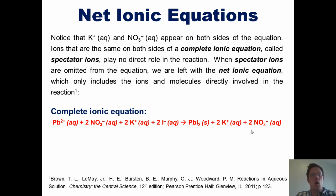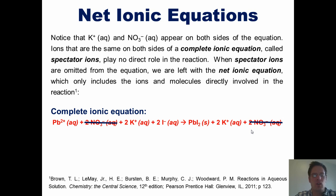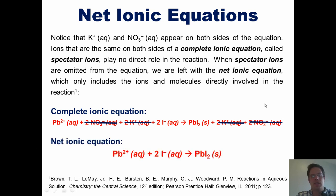When spectator ions are omitted from the equation, we are left with something called the net ionic equation, which only shows the ions and molecules that actually do any type of reaction. So what we can do is cross out the nitrate because it's the same on both sides, and cross out the potassium because it's the same on both sides, just like we would in an algebraic equation. Everything that is left we take down into the net ionic equation, which only shows the ions that actually do something.